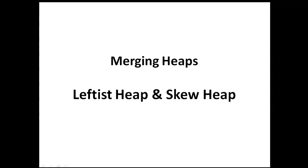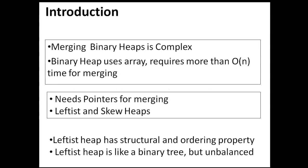Hello everyone. In this video we shall be learning how to do merging of two heaps. The data structure is named as leftist heap and skew heap. Merging binary heaps is very complex because binary heaps use arrays and it requires more than order of N time for merging them. So we need to use pointers for merging.